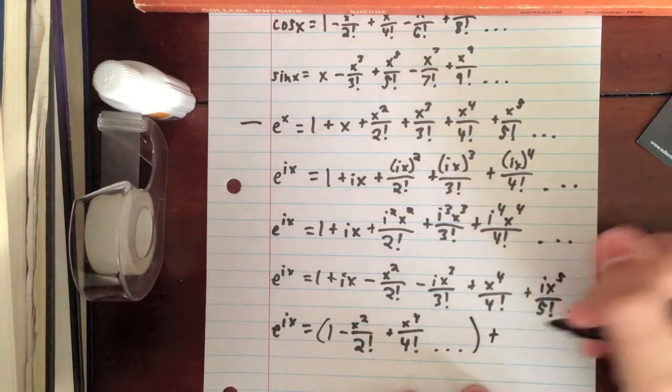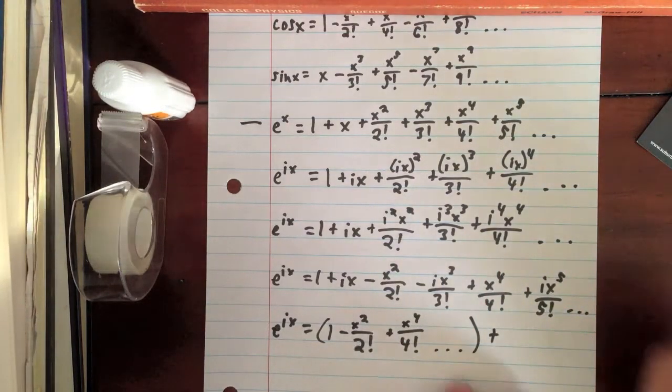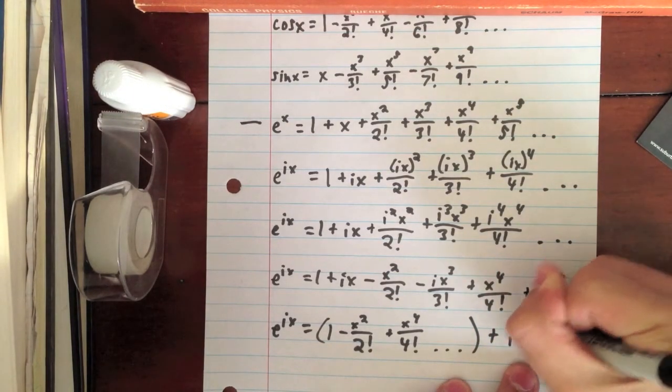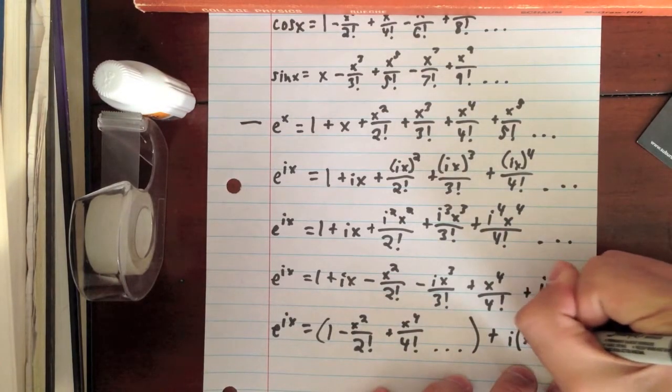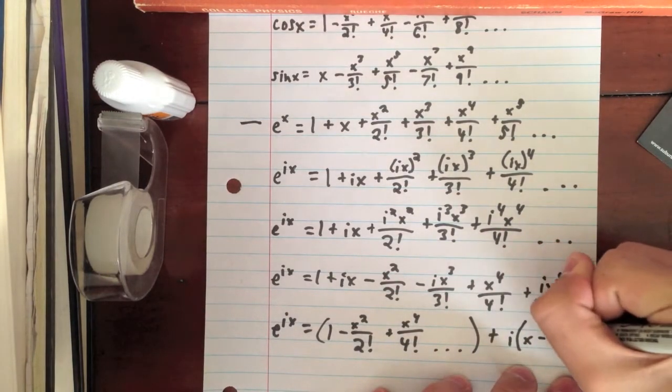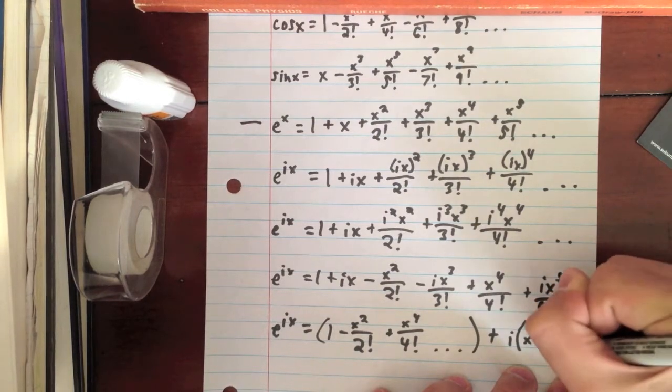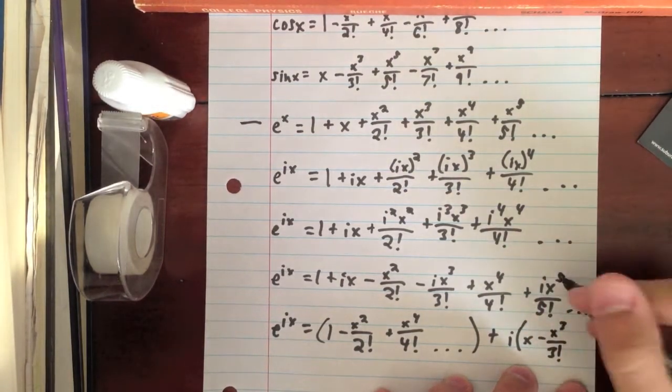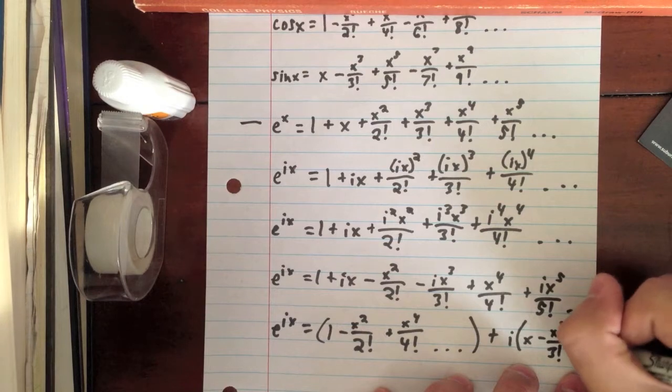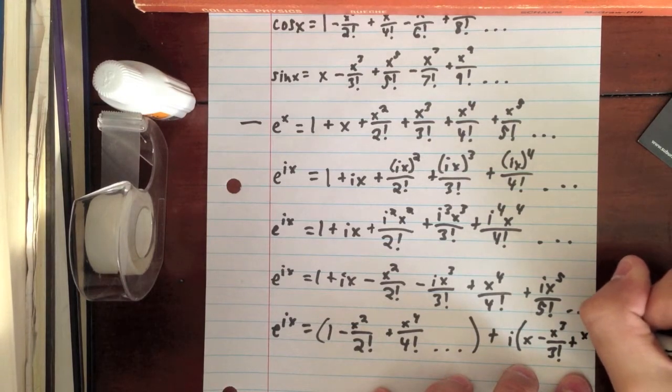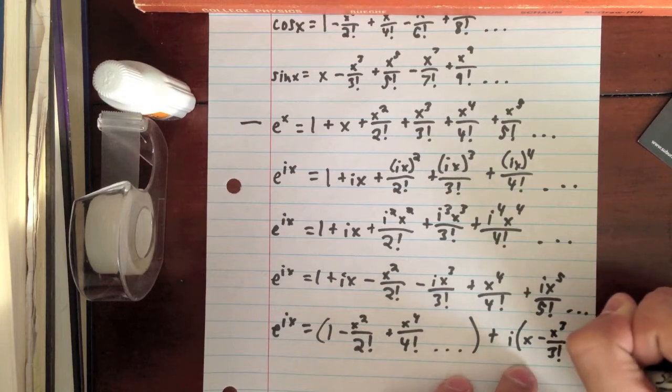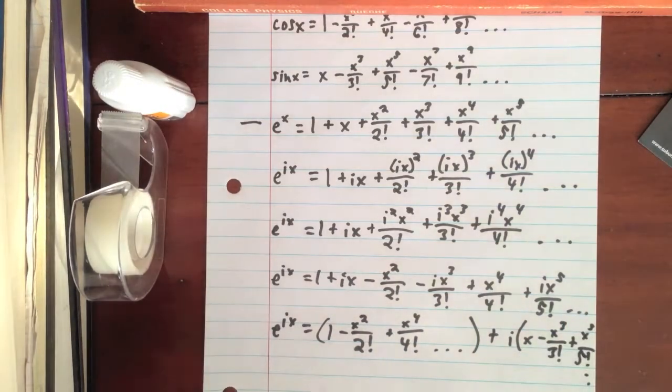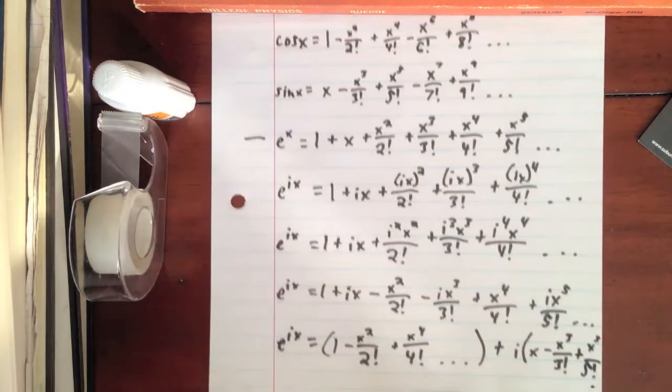And then, plus, we're going to factor out an i from the imaginary terms. So, let's write i. And then, since we factored that, it'll be x minus, we factored out the i. So, x to the third over 3 factorial. And factor out that i plus x to the fifth over 5 factorial. And so on and so forth. So, you should start to see a theme here.